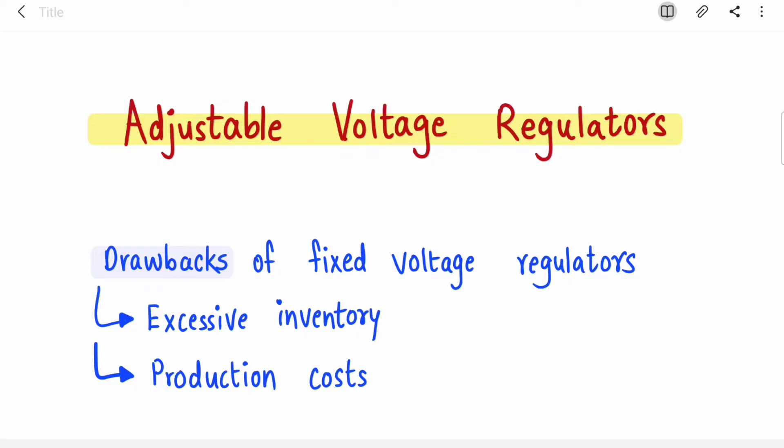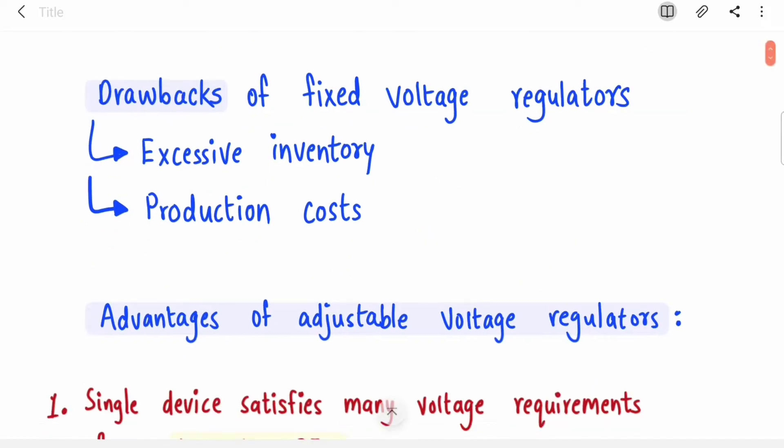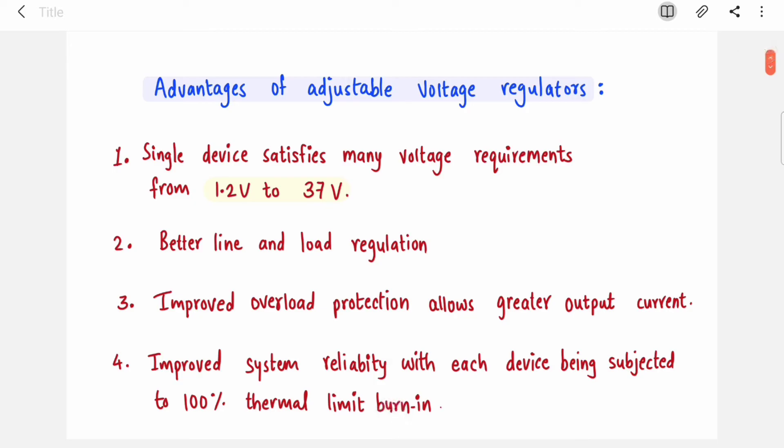That's how adjustable voltage regulators came into picture. These are a few advantages of adjustable voltage regulators. This single device will satisfy many voltage requirements from 1.2 volts to 37 volts.